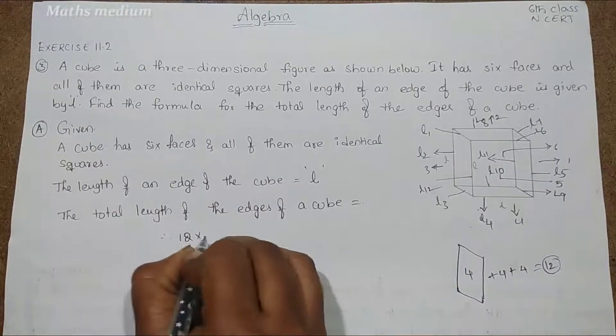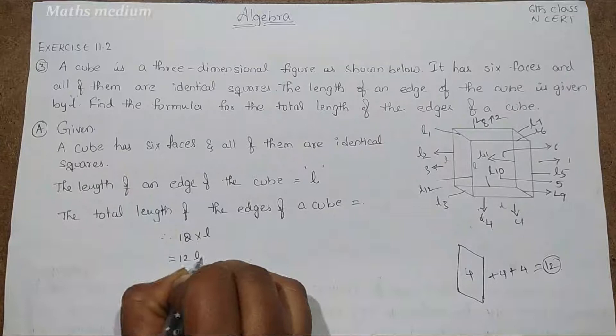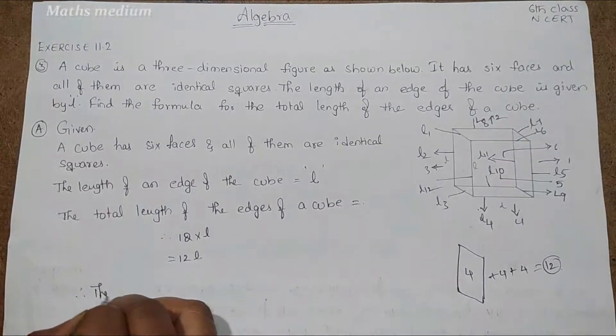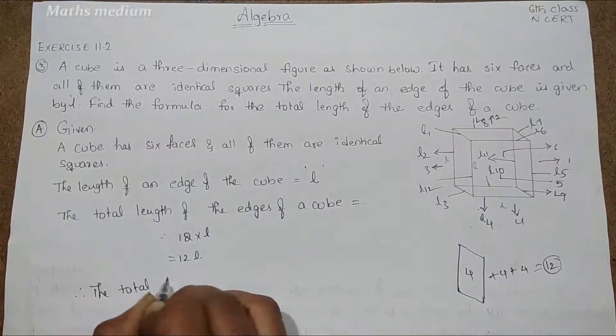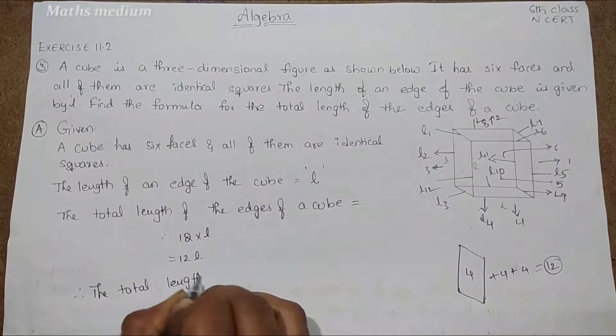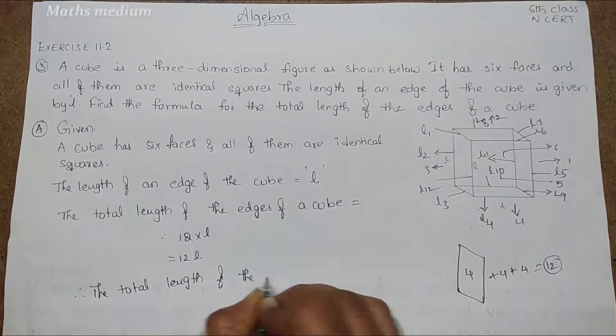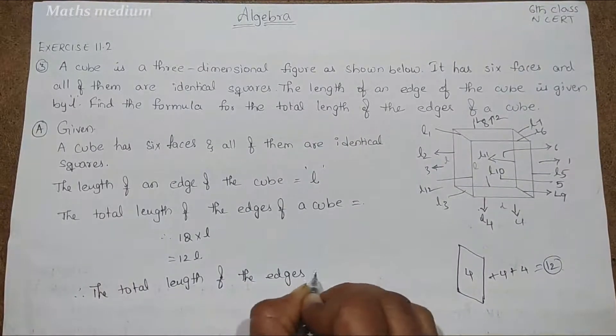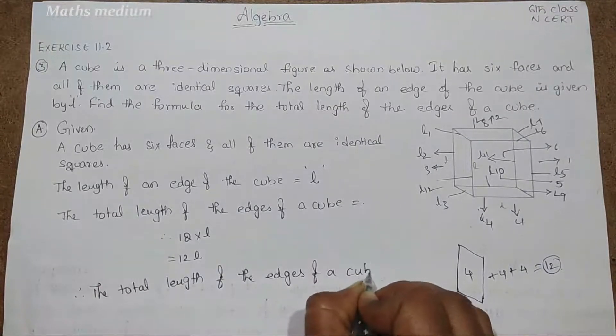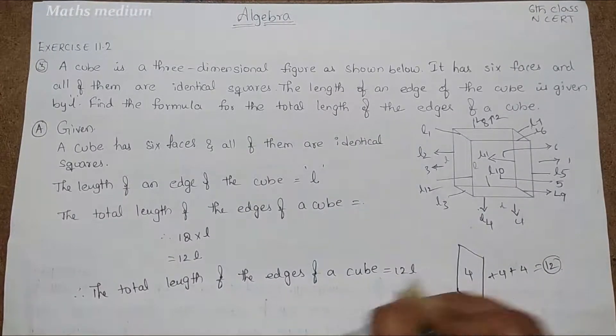Therefore, 12 into L that is equal to 12L. Therefore, the total length of the edges of a cube is equal to 12L.